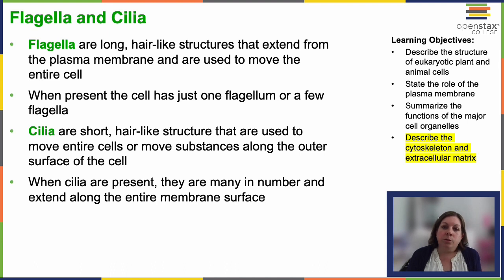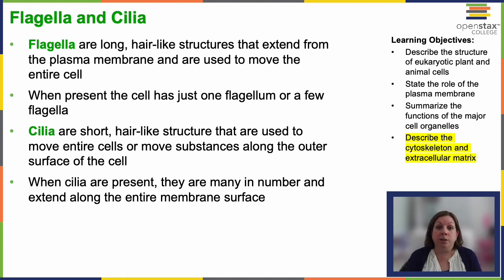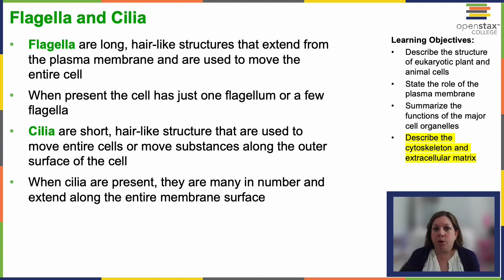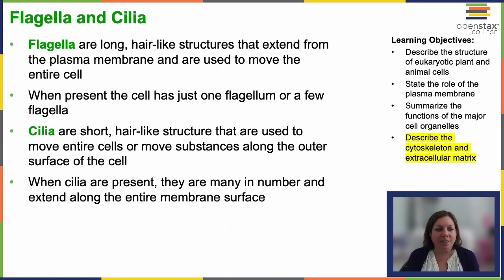Flagella are usually a long projection, either out the front or the back of the cell. They are typically associated with motility — there are several different flagella-associated motilities. They can also be found for transport of ova through the fallopian tubes, interestingly enough. This is what drives motility for sperm as a single flagella sticking out the back end of the cell. These are really fascinating structures — I studied flagella during my doctorate. All right, so that wraps up the cytoskeleton.